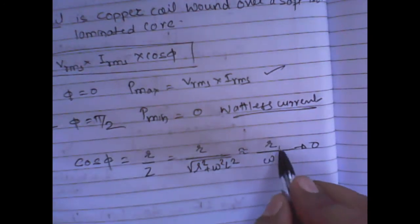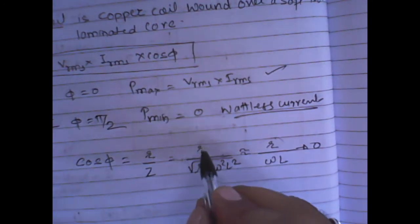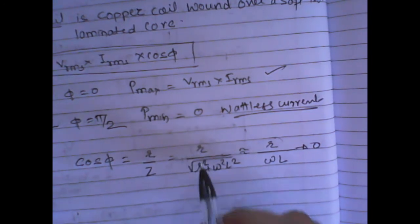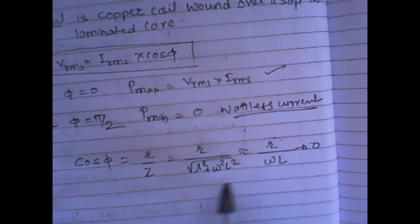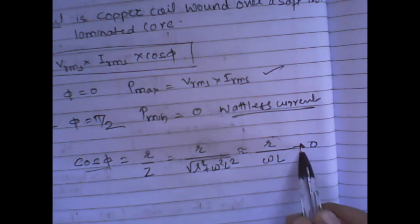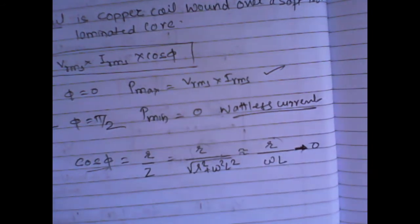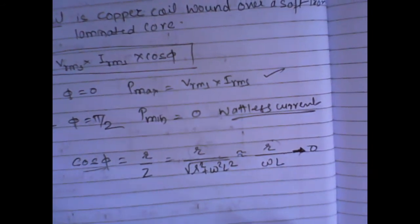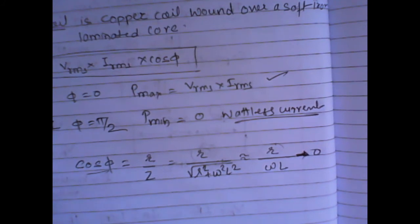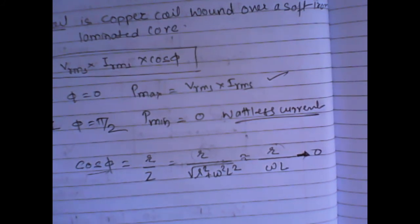R is nothing but the resistance of the choke coil. We cannot have an ideal coil, but R is the resistance of the choke coil. So the value of cos φ is tending to zero. We use a choke coil to be connected in an alternating circuit to reduce the current in the circuit instead of a resistance.